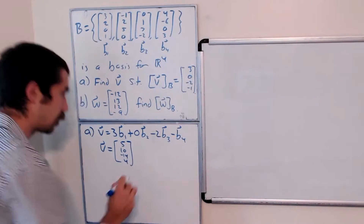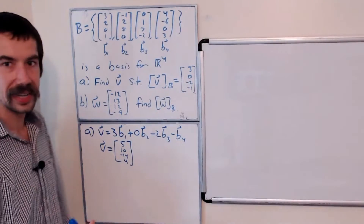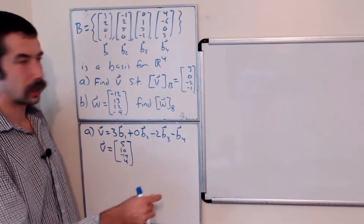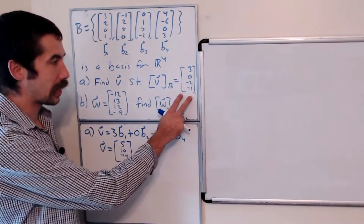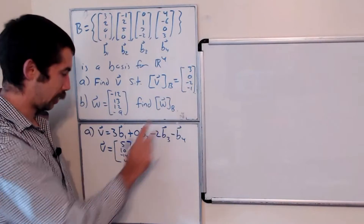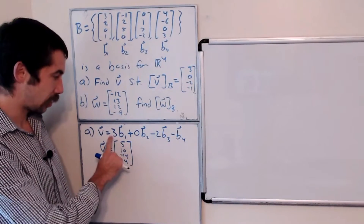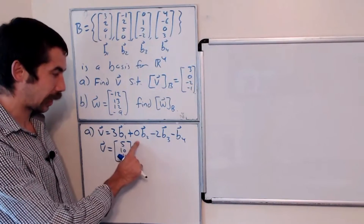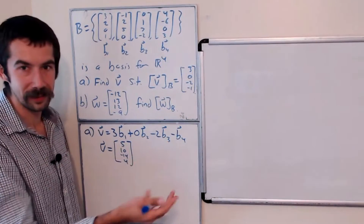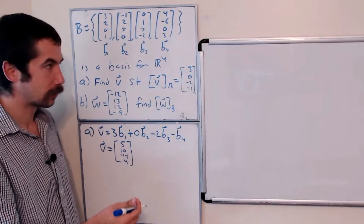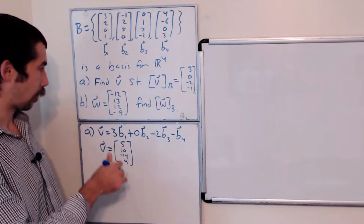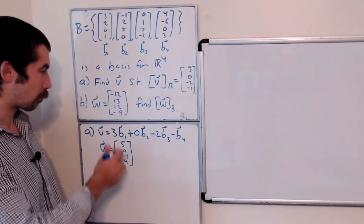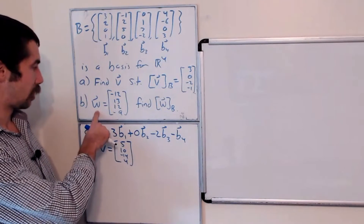So it's really easy to go from a B coordinate vector back to the original vector — it's just how much we scale each of the basis vectors by. Now let's try to reverse this.